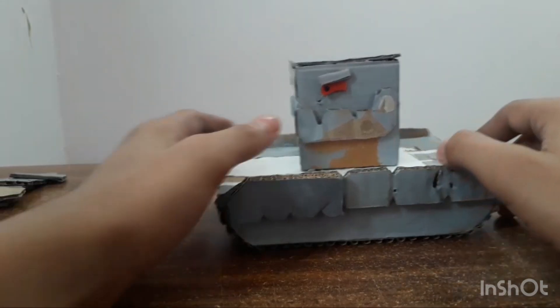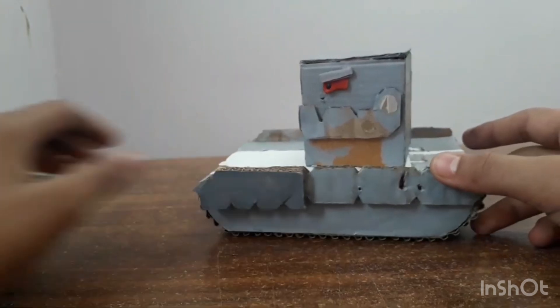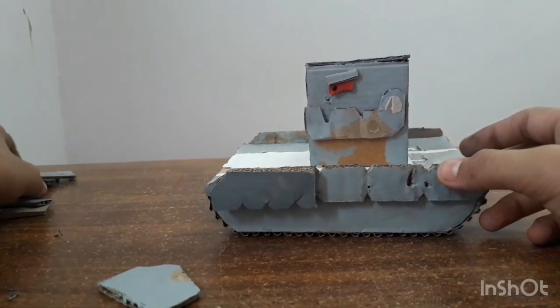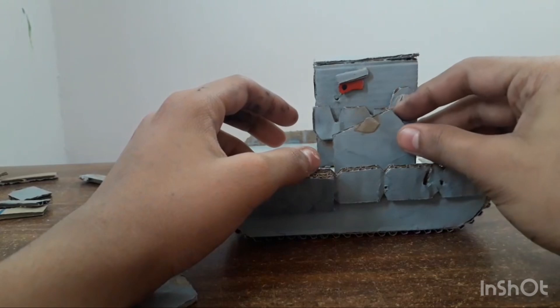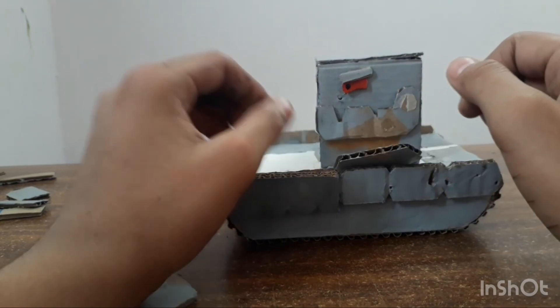Now glue the head on the body, adding some more details like the turret and gun. Finish it by painting the non-painted areas.